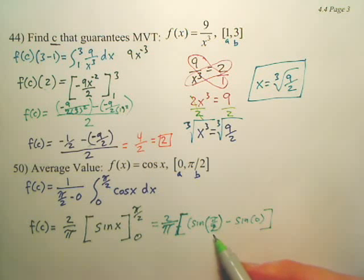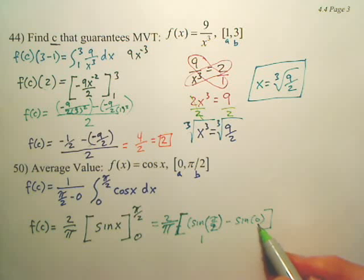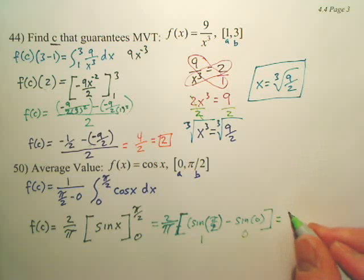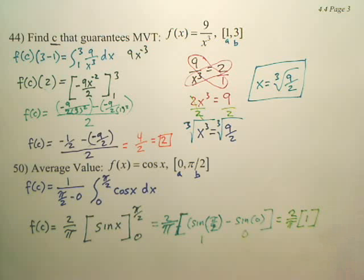What's sine pi over 2? That is 1, and sine 0 is 0. So isn't this technically just 2 over pi times 1? So my answer is 2 over pi.